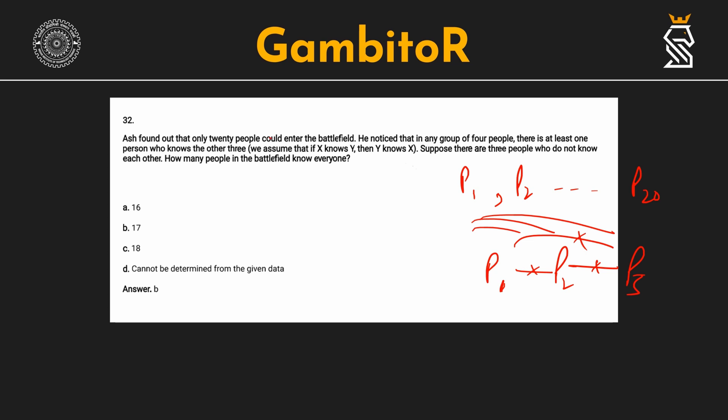We have to find how many of the persons out of this 20 know everyone else. Like for P1, if P1 knows all P2 to P20, all remaining 19 people, then the count increases by 1. So, we have to count the number of persons. How will we do so?